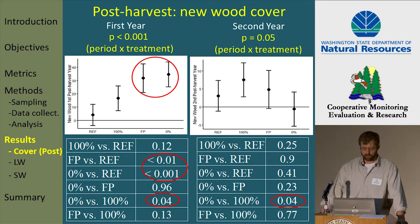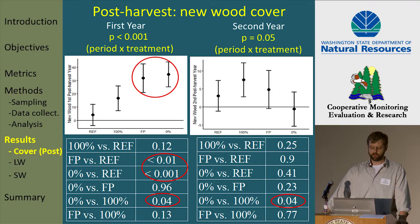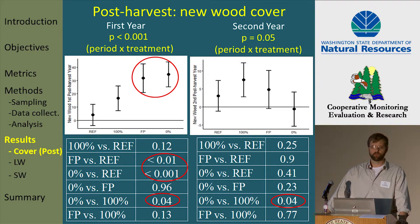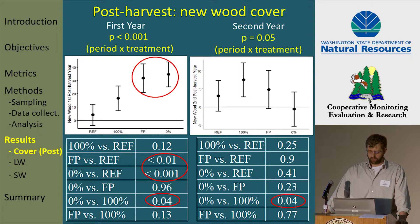In terms of post-harvest new wood cover, during the first year post-harvest we saw our greatest average cover in our forest practice and 0% sites, amounting to roughly 32% to 35% average cover in those two treatments. During the second year post-harvest we again saw a significant period-by-treatment effect. There was no more new wood left in the 0% treatments to fall into the stream, so we didn't have any new wood there, which is not surprising.